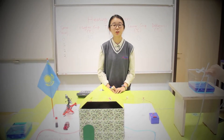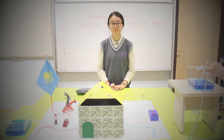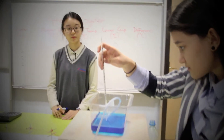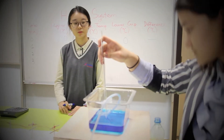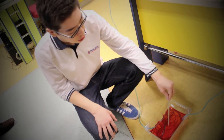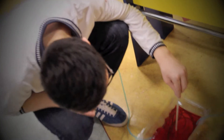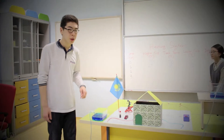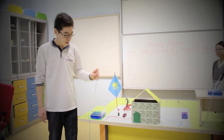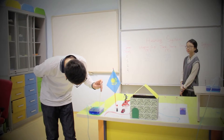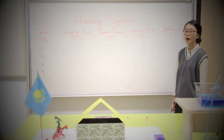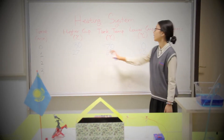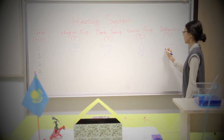Let's begin our demonstration. Now we will see how the temperature has changed after one minute. After one minute, the temperature in the higher cup became 27 Celsius. The temperature in the background tank became 65 Celsius. The temperature in the lower cup became 32 Celsius. The difference between the higher cup and the lower cup is 5 Celsius.